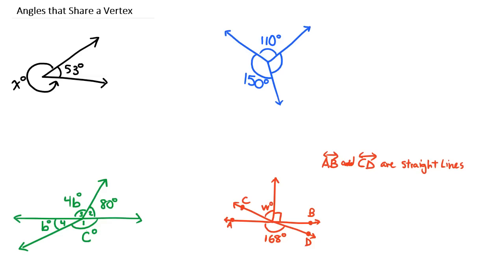Let's take a look at this first example. Here is our vertex, and one of our angles is 53 degrees. The other angle comes all the way around here. If we were to go all the way around this circle counterclockwise and come all the way back, that is 360 degrees. So we see that these two angles — this 53-degree one and this x-degree one — have to equal 360 degrees.